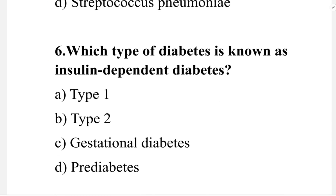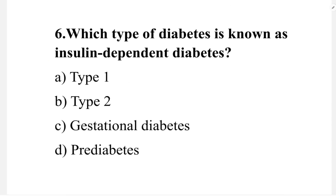Next question: which type of diabetes is known as insulin-dependent diabetes? Option A: type 1. Option B: type 2. Option C: gestational diabetes. Option D: prediabetes. The correct answer is option A, type 1. Type 1 is called insulin-dependent diabetes.